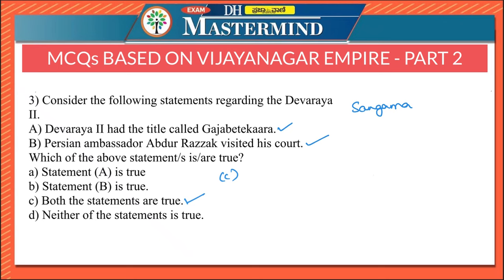Devaraya 2 recruited a large number of Muslim soldiers in his army as archers. During his time, Vijayanagara became the most wealthy and powerful state. The commoners and citizens of Vijayanagara believed that he was the incarnation of Indra — please remember this point, as it could be asked in exams.